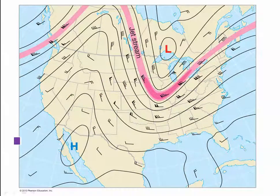Hi class, another quick review of Chapter 12, looking at the connection between upper air flow and weather forecasting. This map we're looking at here is a really simplified upper air chart, showing the flow aloft and the position of the jet stream.